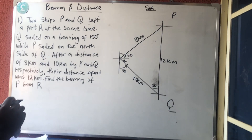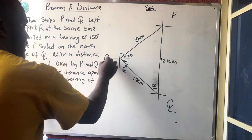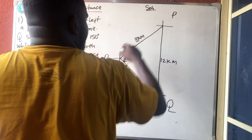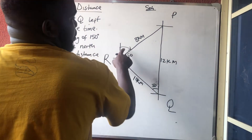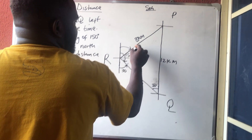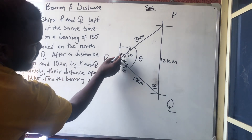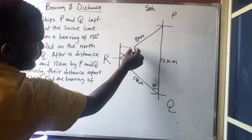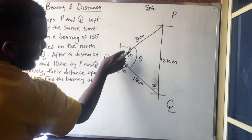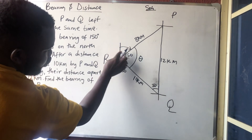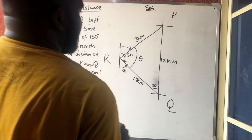Now let's find the bearing of P from R, where R is the port they started from. The bearing of P from R is measured from the north to the line reaching P. We need angle theta. Since 150° goes from here to here, the bearing of P from R equals 150 minus theta, because theta plus this small angle makes up the complete 150°.